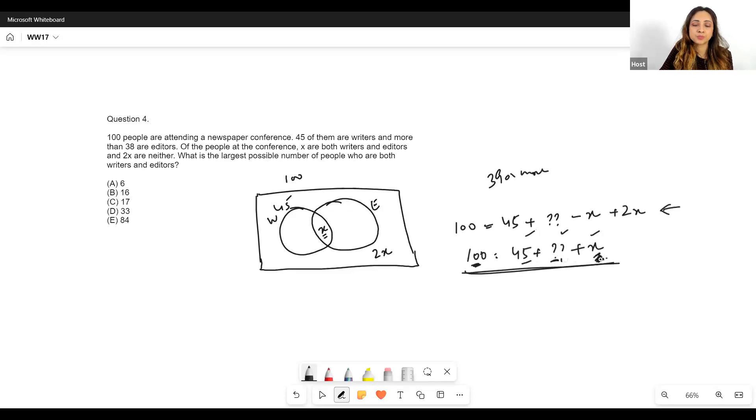Now this is 45, it's already defined, I can't do anything about it. But this one is not - it is 39 or more. And now since I want to maximize this, I should then take this as 39 only, the minimum value that it can take. Make sense?